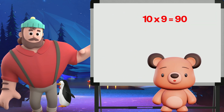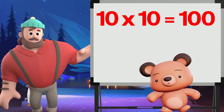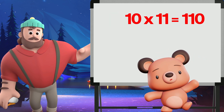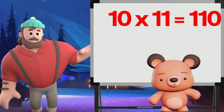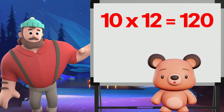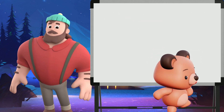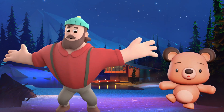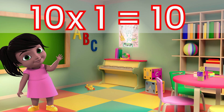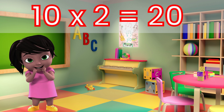Ten times nine is ninety. Ten times ten is one hundred. Ten times eleven is one hundred ten. Ten times twelve is one hundred twenty. Come sing Table of ten with me! Ten times one is ten. Ten times two is twenty.